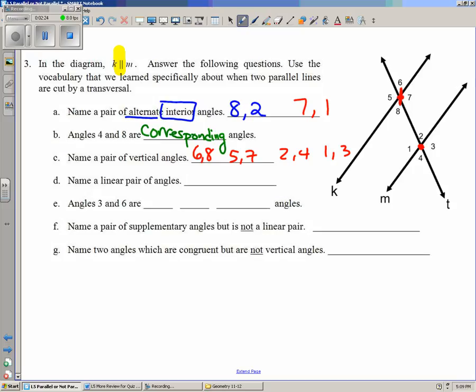Linear pairs are pairs that form a line together. So, for example, if I took angle 5 and I paired it off with angle 6, if you notice, they are not congruent, but they are supplementary and they form a line together.